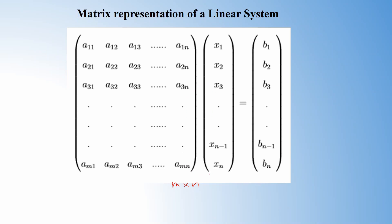Next we have the column vector containing the variables x1, x2, x3, ..., xn. On the right-hand side, each linear equation has a constant term, so b1, b2, b3, ..., bn are assembled in a column vector on the right-hand side. Generally, we notate this as Ax = b, where A is known as the coefficient matrix, x is known as the variable vector, and b is the constant term. Therefore, any given system of linear equations can be represented in the matrix form Ax = b.